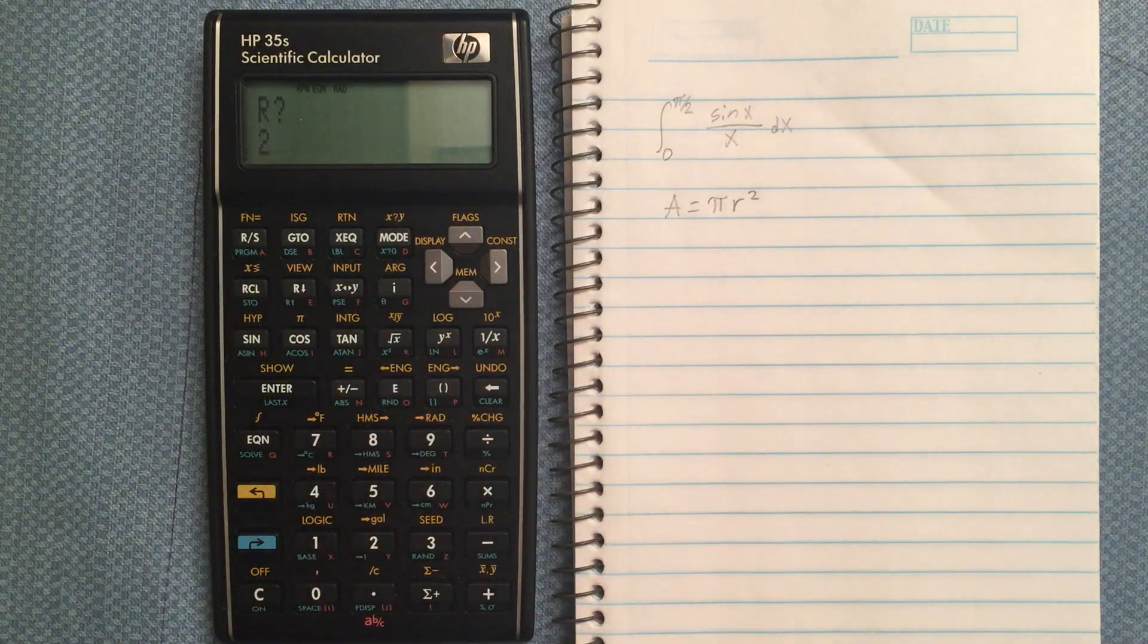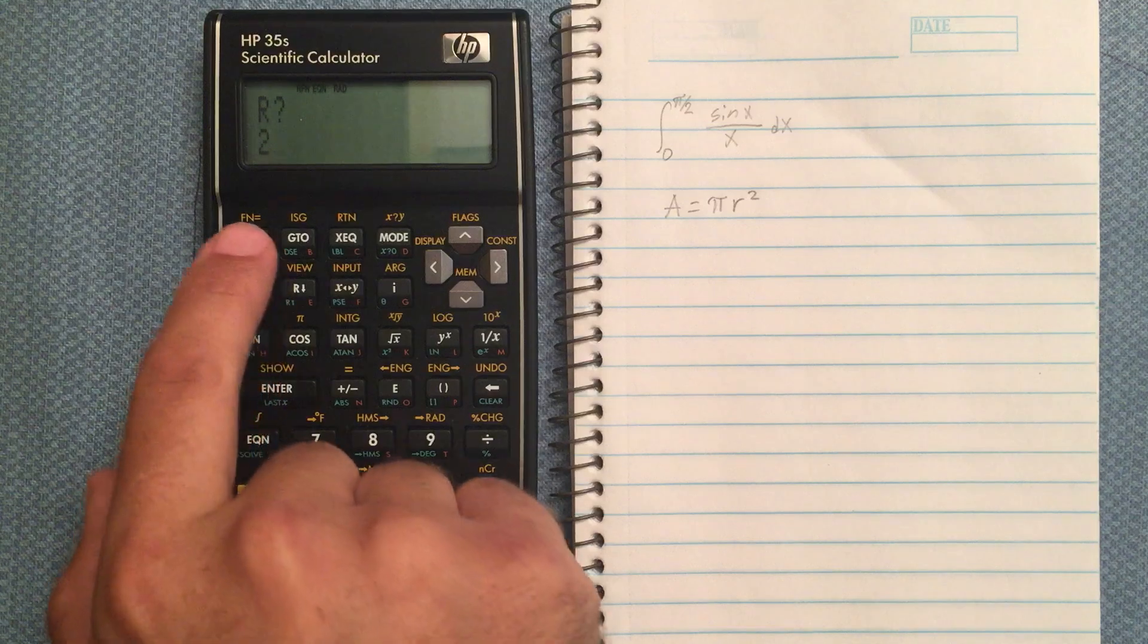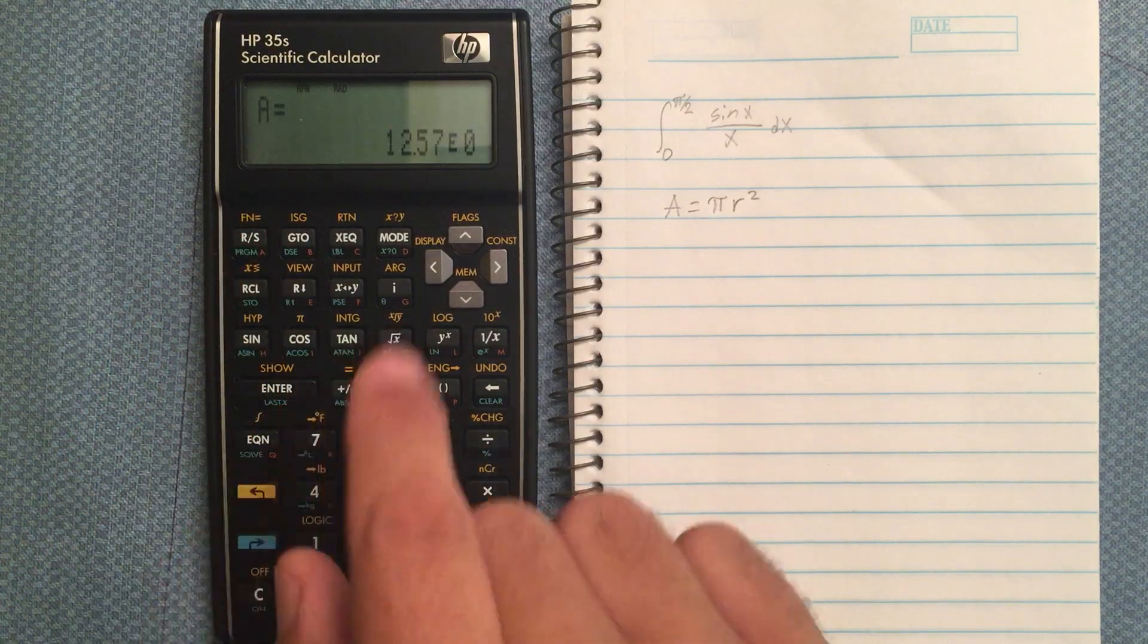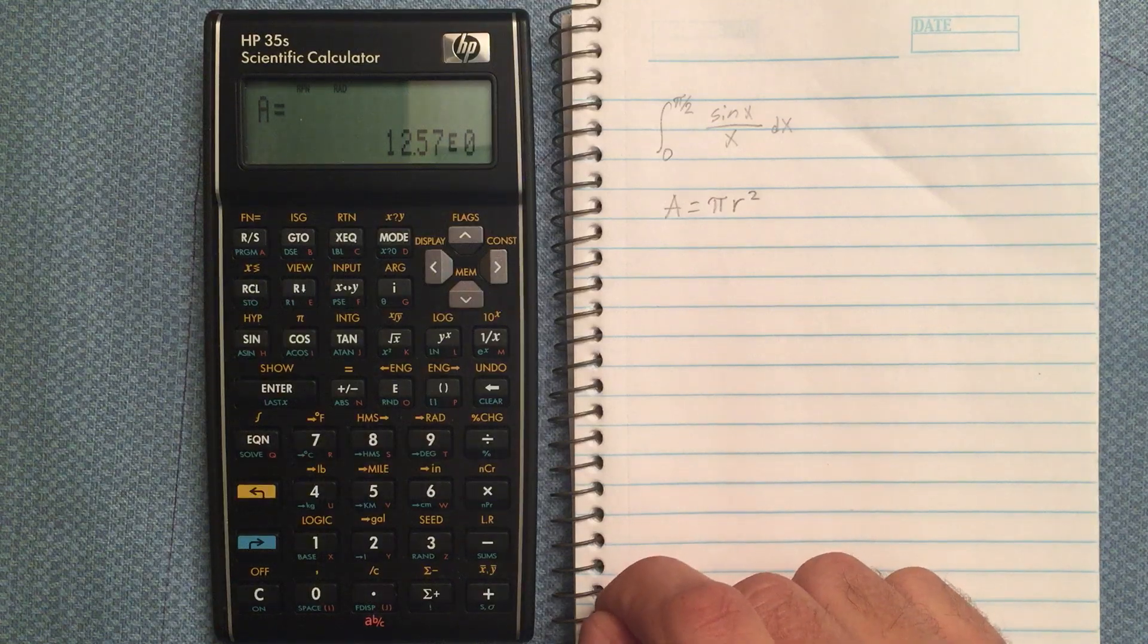So let's say we just want to do 2. Let's put in 2 and then hit the run stop button to continue running the program. And it says A is an area of 12.57.